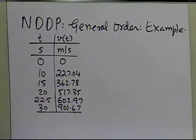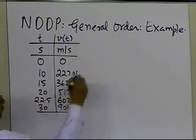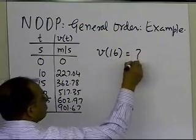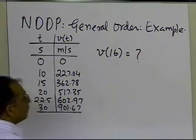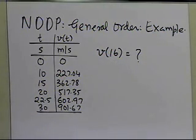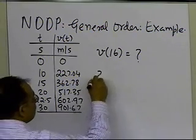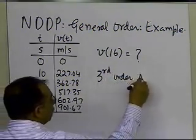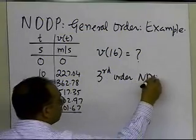Those are the six data points which we are given, and what we are asked to do is to find out the value of the velocity at t=16. We are asked to use a third-order Newton's divided difference polynomial.